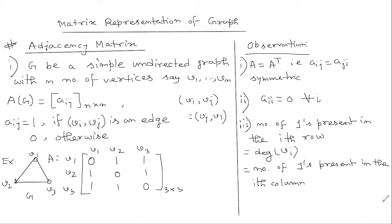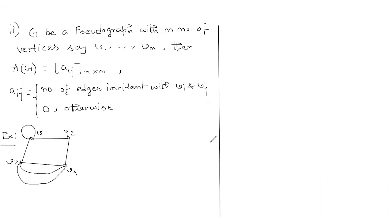Next, let us go to a pseudo-graph — that means a graph which contains both self-loops and parallel edges. For this kind of graph, we define the adjacency matrix as an n cross n matrix where the entries aij equal the number of edges incident with vertices vi and vj, and 0 otherwise. It would be better to look at an example to understand the definition. So say this is our graph G2.